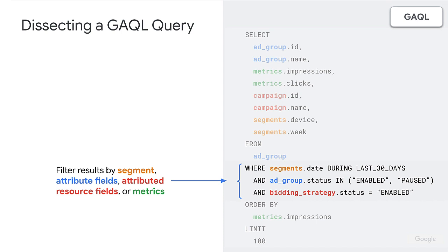And finally, as I mentioned, we have attributed resource fields, so we can put those directly into our WHERE conditions as well — for example, filtering WHERE bidding_strategy.status = ENABLED. That's another piece of syntax: you can simply write equals and put the status there. So when we combine all of these together using the AND keyword, we're filtering results to just the last 30 days, to ad groups that are either enabled or paused, but only with bidding strategies that are enabled.